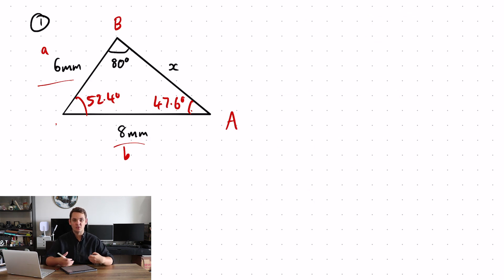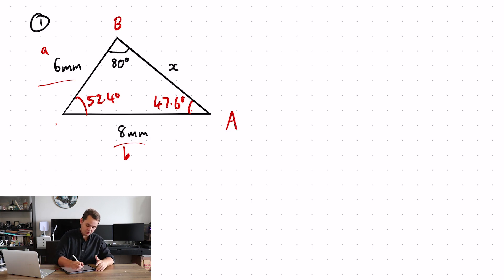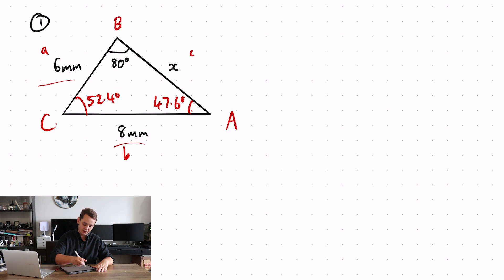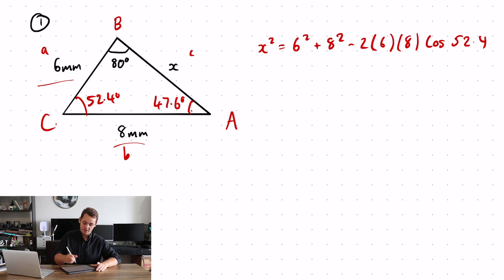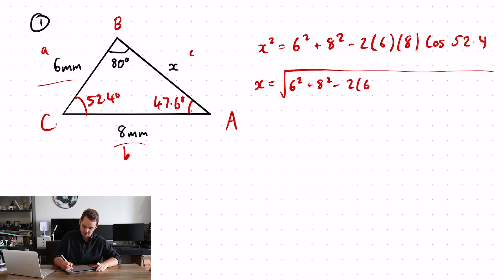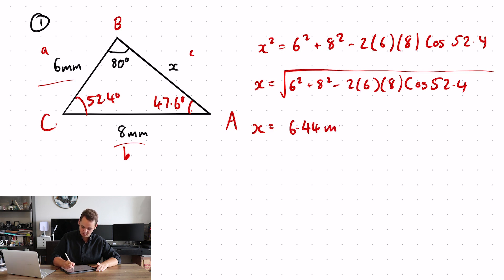Now I know that angle is 47.6 degrees, I'm going to use that to find the remaining angle: 52.4 degrees. I'm going to use the cosine rule in this situation. My unknown side is lowercase c and the angle opposite is capital C. So: X squared equals 6 squared plus 8 squared minus 2 lots of 6 times 8 cos 52.4. Square rooting that gives me an x value of 6.44 millimeters.